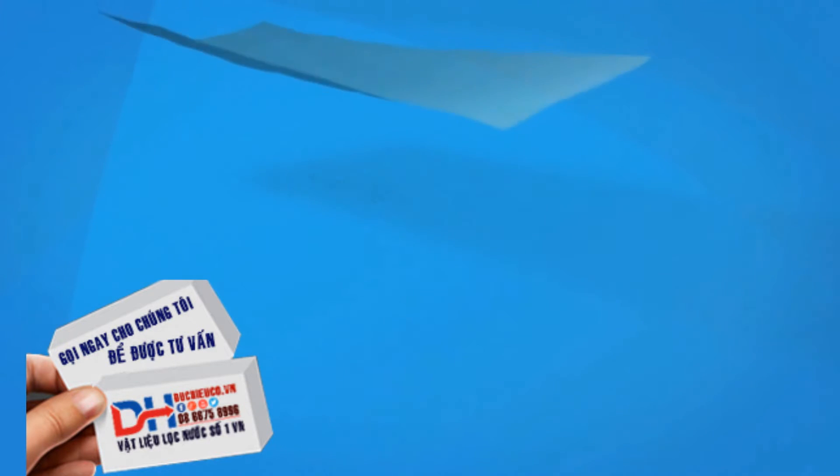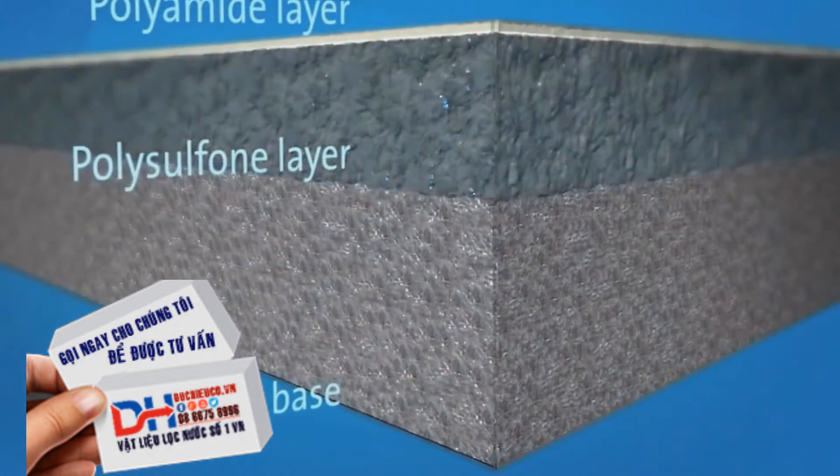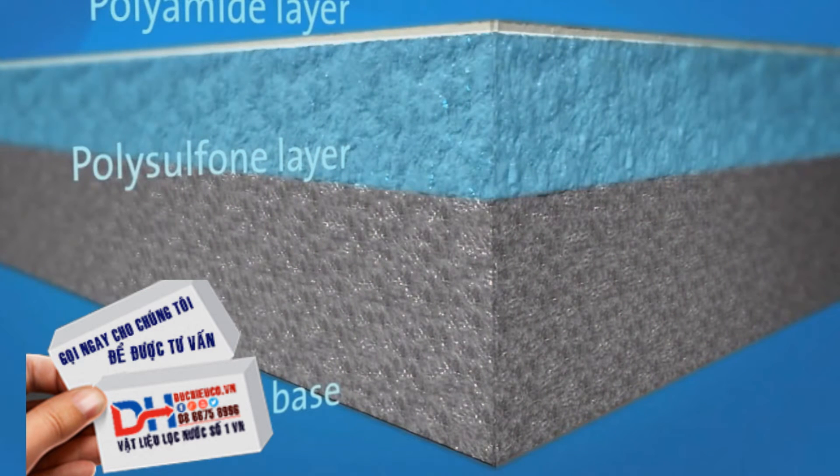Reverse osmosis membranes are constructed from a membrane flat sheet. It is comprised of three layers: a polyester fabric support base, a microporous polysulfone layer, and a 0.2 micron thick polyamide barrier layer.